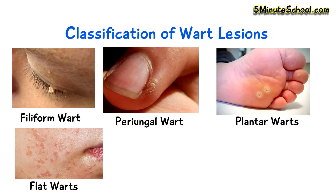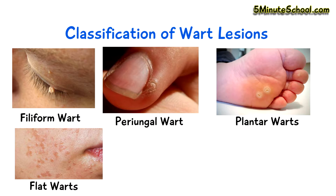To explain briefly: filiform warts have long thin projections and are most commonly seen on the face. Peri-ungual warts usually appear around the nails and have a cauliflower shape. Plantar warts, or verrucas, form painful plaques. And flat warts are small,